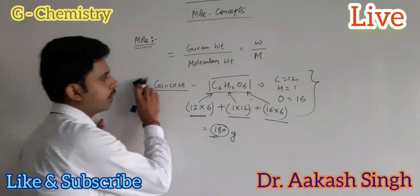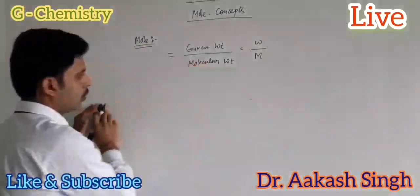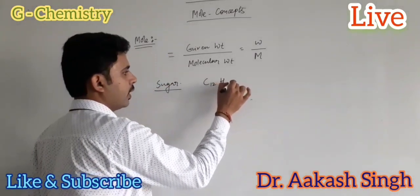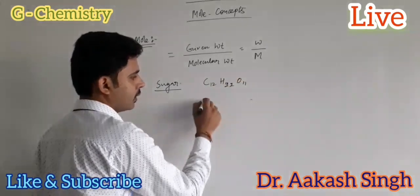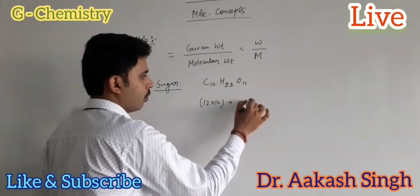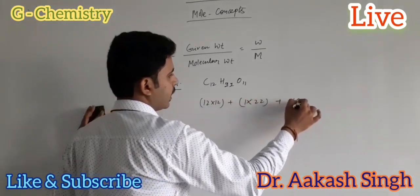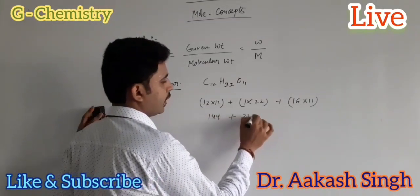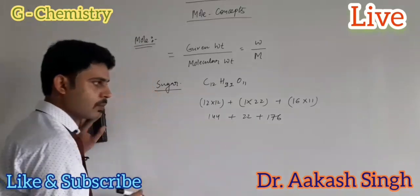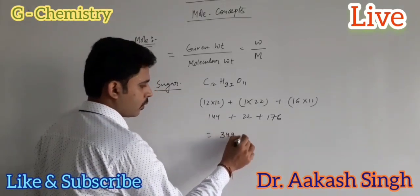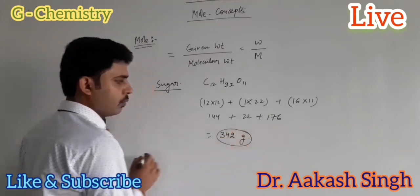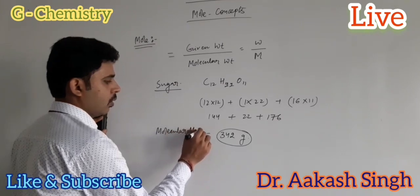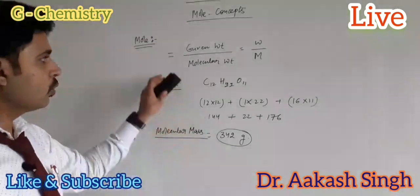In the same way, the molecular weight of sugar C₁₂H₂₂O₁₁ is 12 into 12 plus 1 into 22 plus 16 into 11. This becomes 144 plus 22 plus 176, so the total value is 342 grams. This is the molecular mass of sugar.